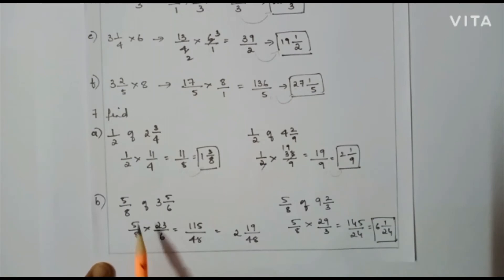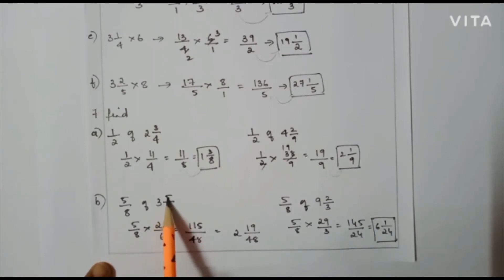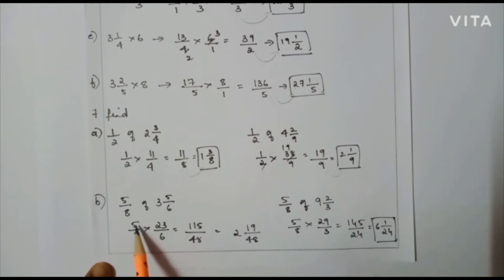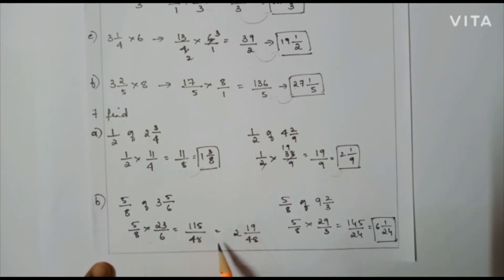The next problem: 5/8 of 3(5/6). Convert: 6×3=18, plus 5 = 23/6. So 5/8 × 23/6. I check whether I can cancel — I can't cancel. So 5 × 23 = 115, and 8 × 6 = 48, giving 115/48. Converting to a mixed fraction gives 2 and 19/48.